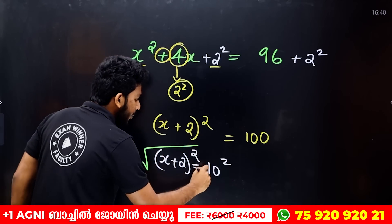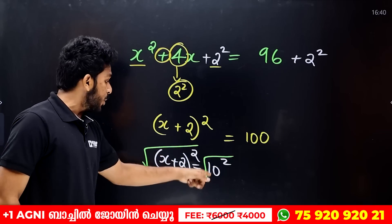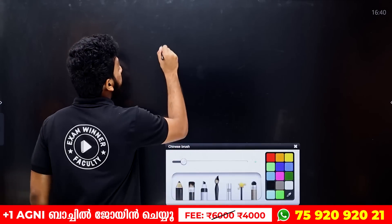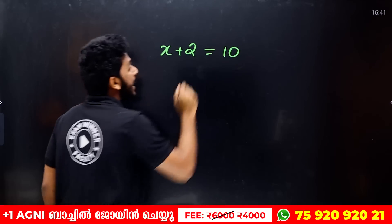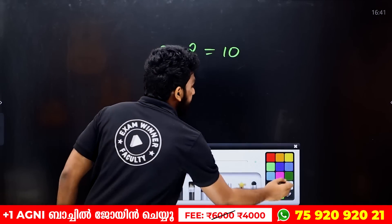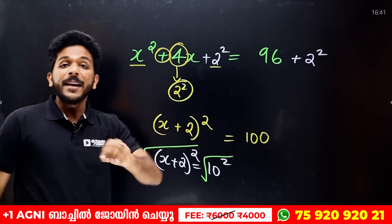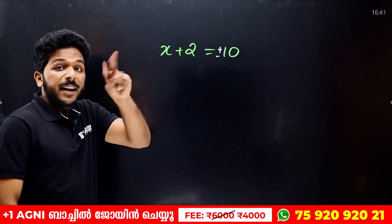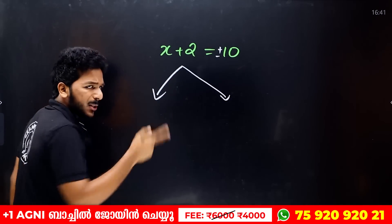I will add a square on both sides. Now, x plus 2 is equal to 10. Taking the square root of both sides gives plus or minus 10. That is plus or minus 10. Now we will subtract 2. If we get the answer, we will get the answer to that one.